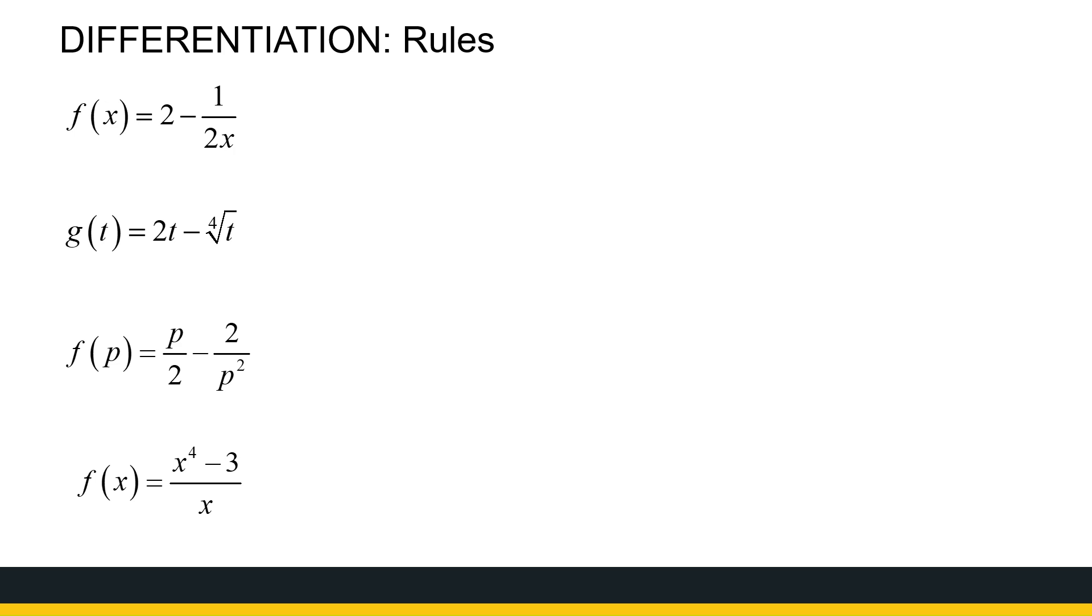2 minus 1 over 2x. Now, to find that derivative, whenever you have to find a derivative of a function, first look at the function and see, can't I rewrite it in a more user-friendly way? Because my rule I have is that the derivative of x to the power n is nx to the power n minus 1. So I want it in the form x to the power n. There's no x to the power n here, but I can rewrite it to make it 2 minus 1 half x to the power minus 1.